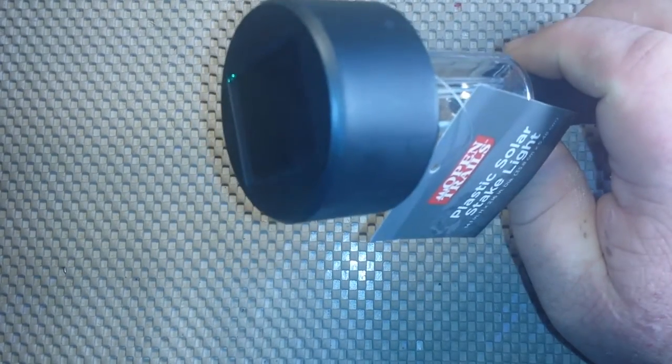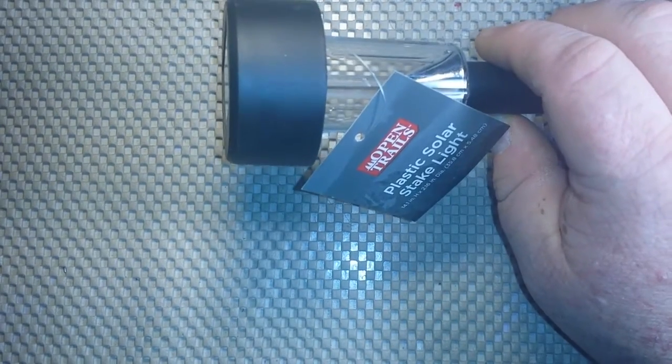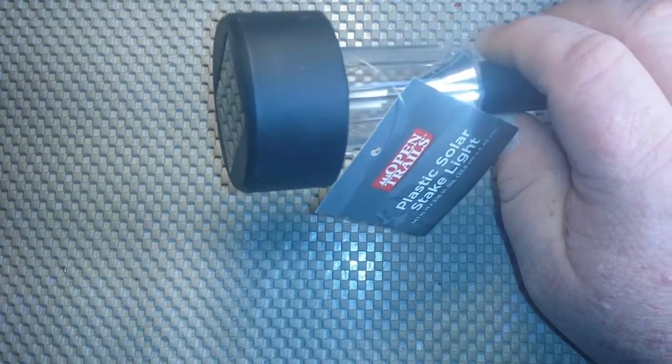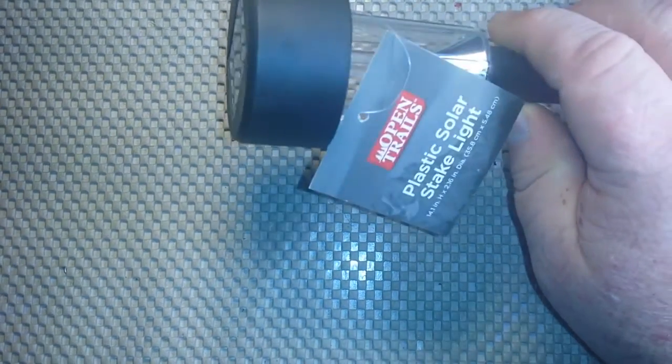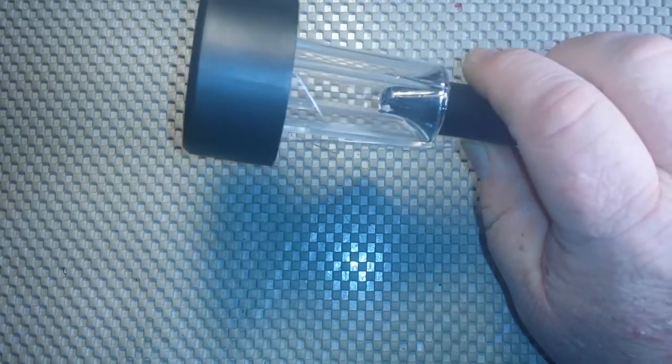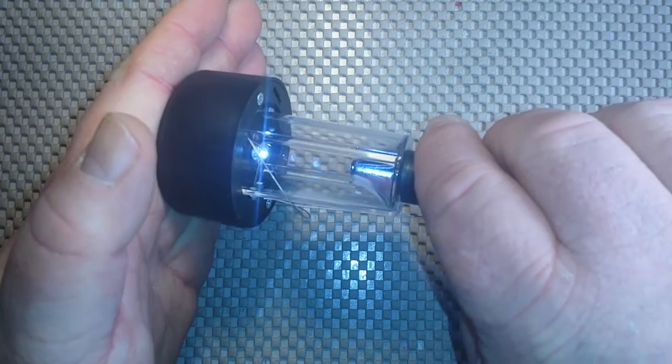So I thought I'd go grab one and we would take it apart because the poster who had originally mentioned it said that these contain a jewel thief, which is a specific type of a boost converter, and also a nice little solar panel. Now, I've had this home now for like five minutes, charged it under an LED light, and as you can see, it's lit up.